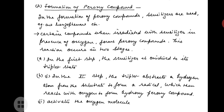Now let us study the second type of reaction: formation of peroxy compounds. In the formation of peroxy compounds, sensitizers are used, and the most common example of a sensitizer is benzophenone. Certain compounds when irradiated with a sensitizer in the presence of oxygen form peroxy compounds. This reaction occurs in two stages. In the first step, the sensitizer is excited to its triplet state.